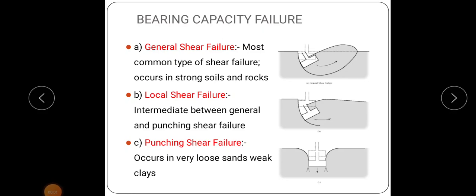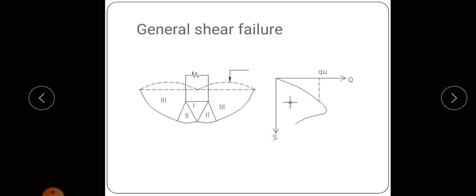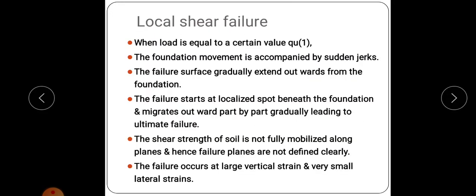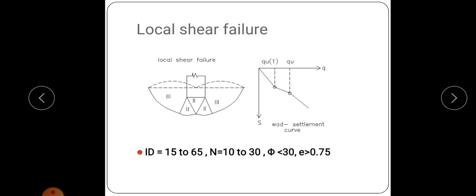Students, in the last class we studied about different types of bearing capacity failures. The types of bearing capacity failures are general shear failure, local shear failure, and punching shear failure. General shear failure is the most common type of shear failure occurring in soil. Today we will discuss Terzaghi's bearing capacity theory.